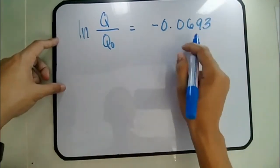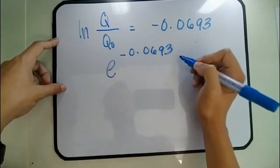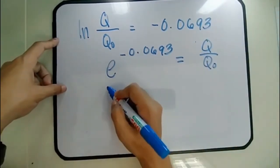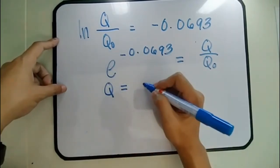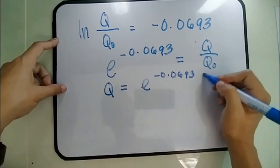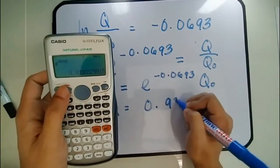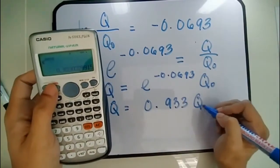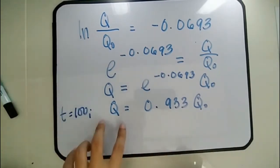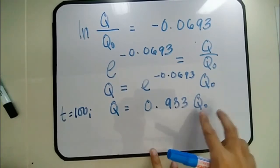Converting to exponential form: e^(−0.0693) = Q/Q₀. Therefore, Q = e^(−0.0693) · Q₀ = 0.933 Q₀. So at T = 100 years, Q equals 93.3% of Q₀.